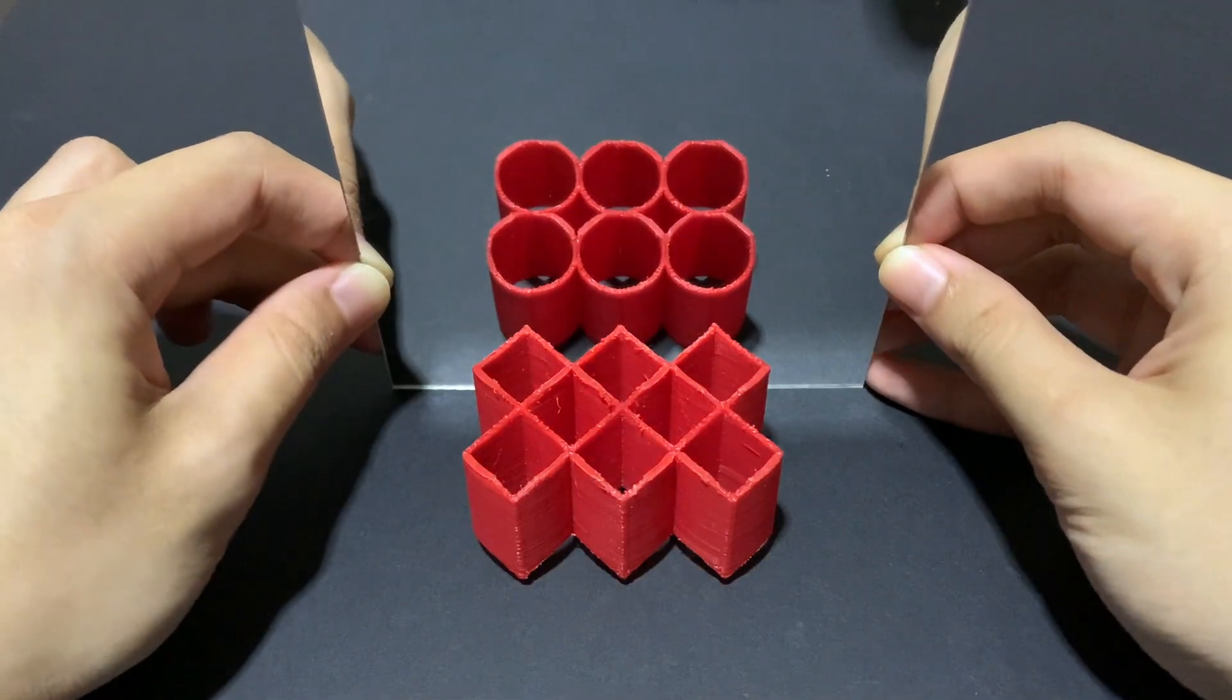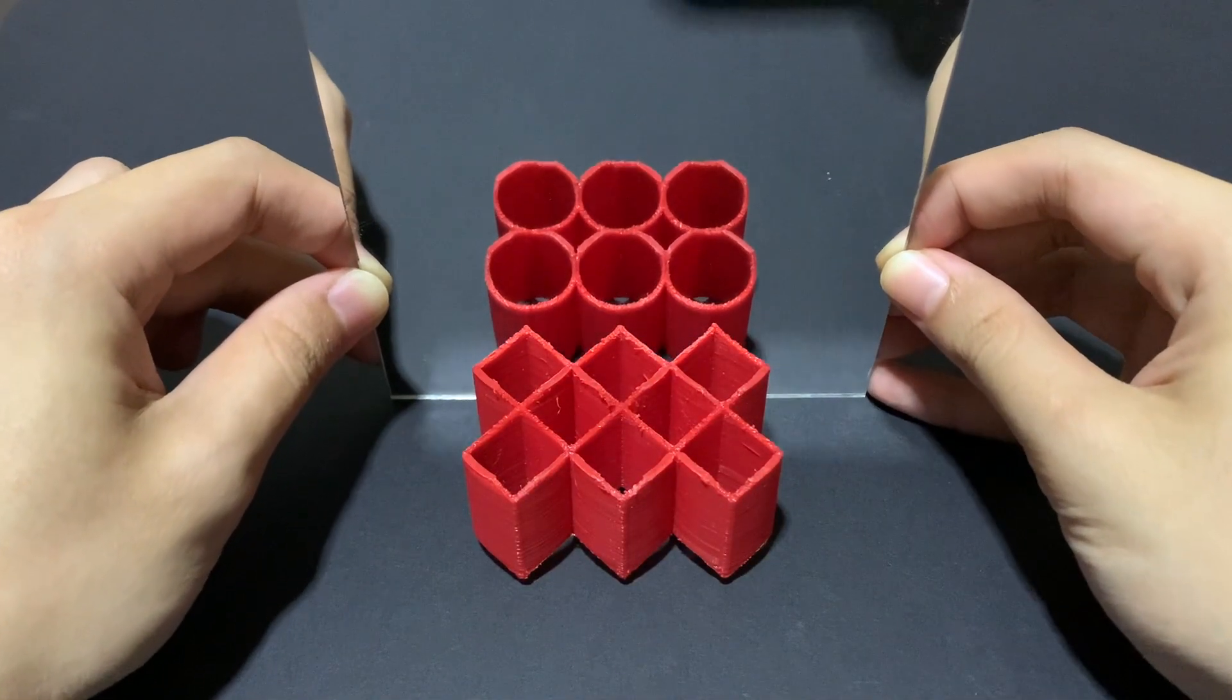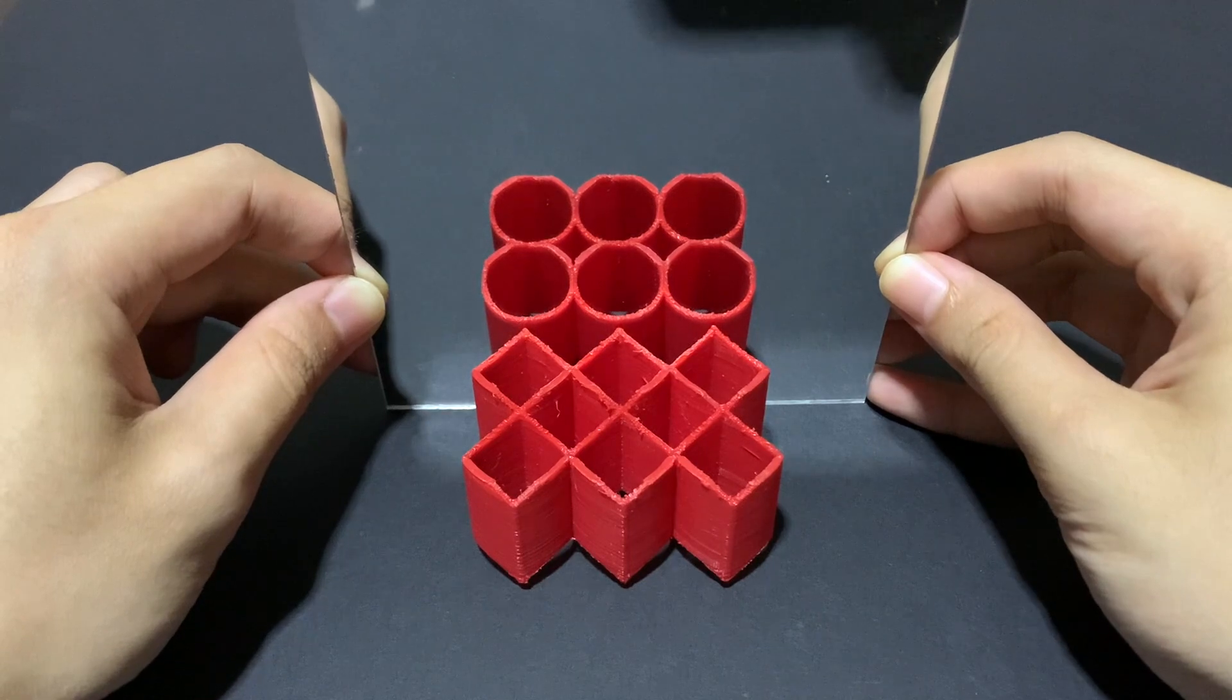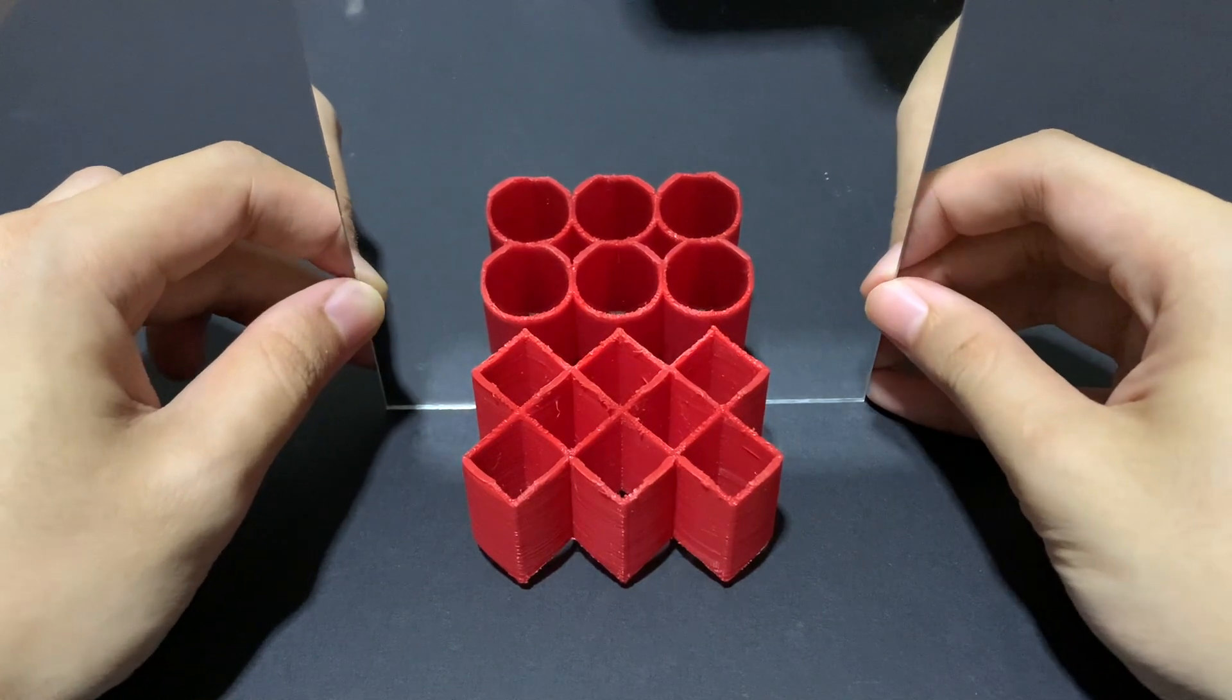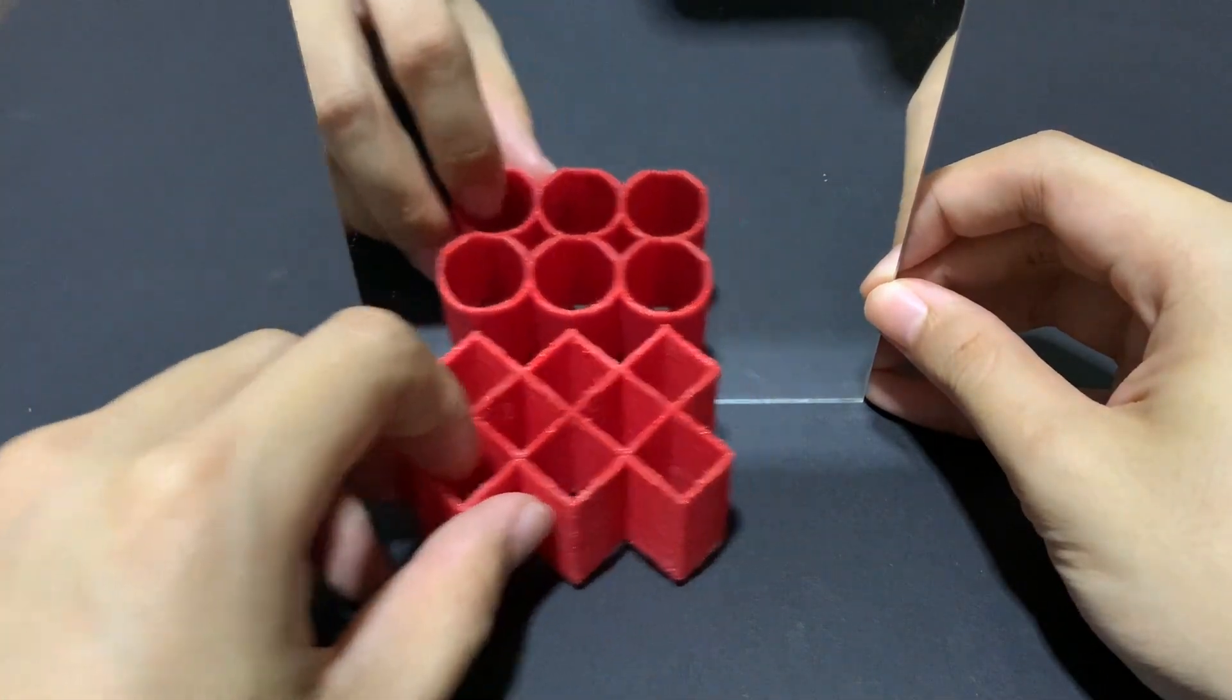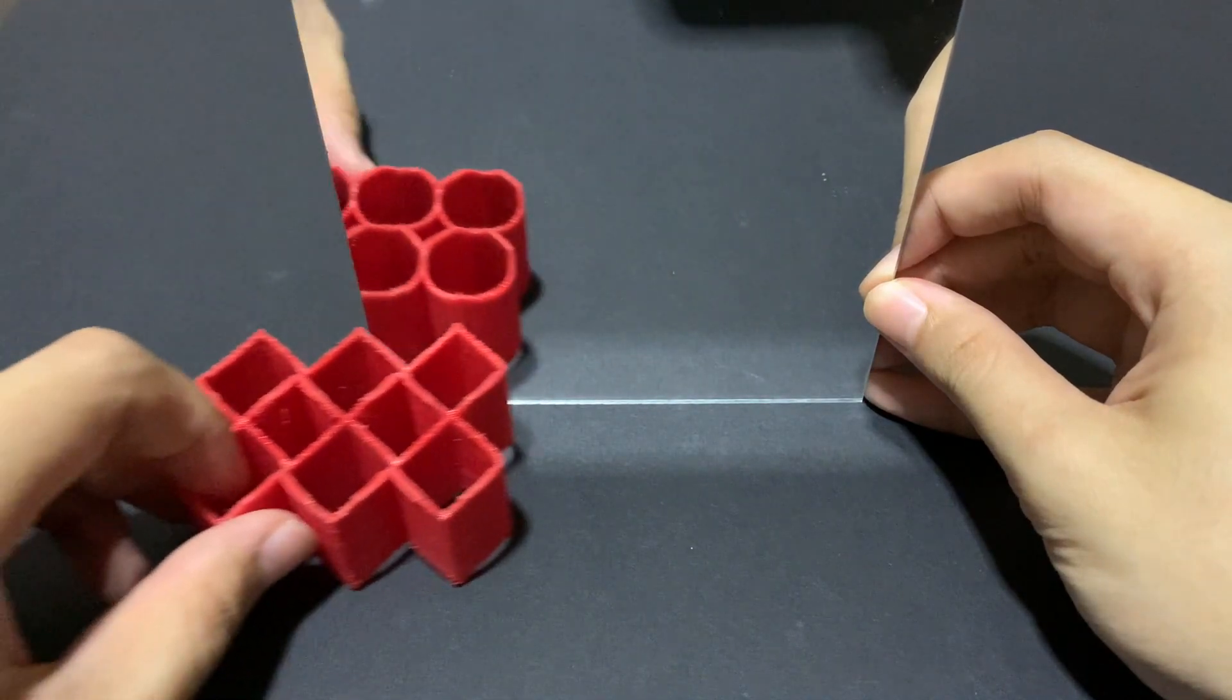So when you put the mirror in, oh this looks a little bit counterintuitive right? We expect to see also the six squares in the mirror but yet what we see are six circles.